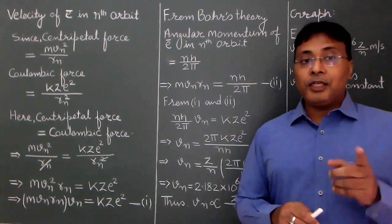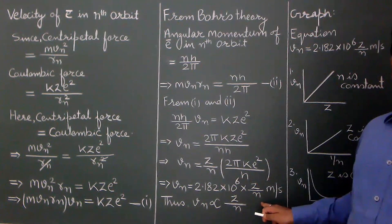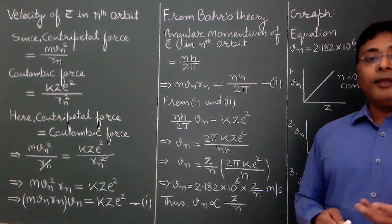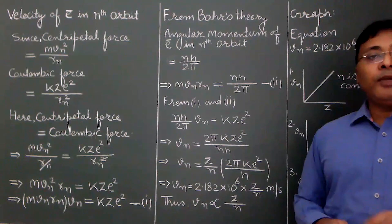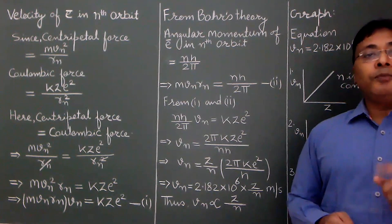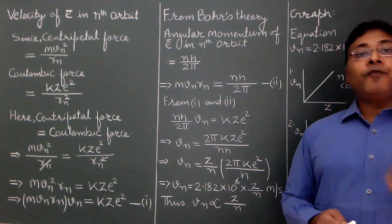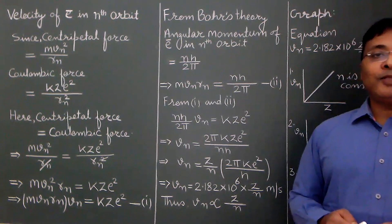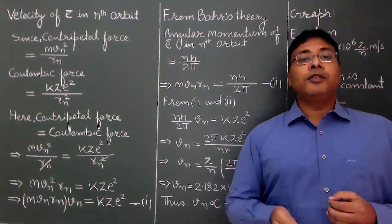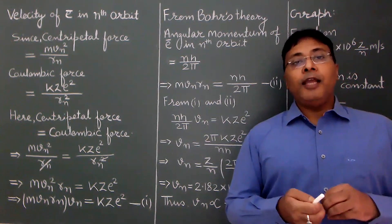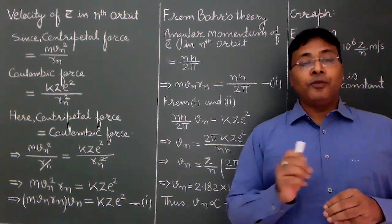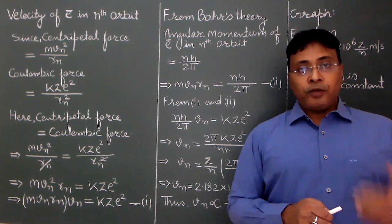For He⁺, z=2 and n=1, so velocity = 2x. For Li²⁺ first orbit, z=3 and n=1, so velocity = 3x. For Be³⁺ first orbit, z=4 and n=1, so velocity = 4x. So as atomic number increases with n constant, electron velocity increases. If the atom is constant but n increases, electron is farther from nucleus and velocity decreases — highest velocity is in the first orbit, then second, third, fourth with gradually decreasing velocity.